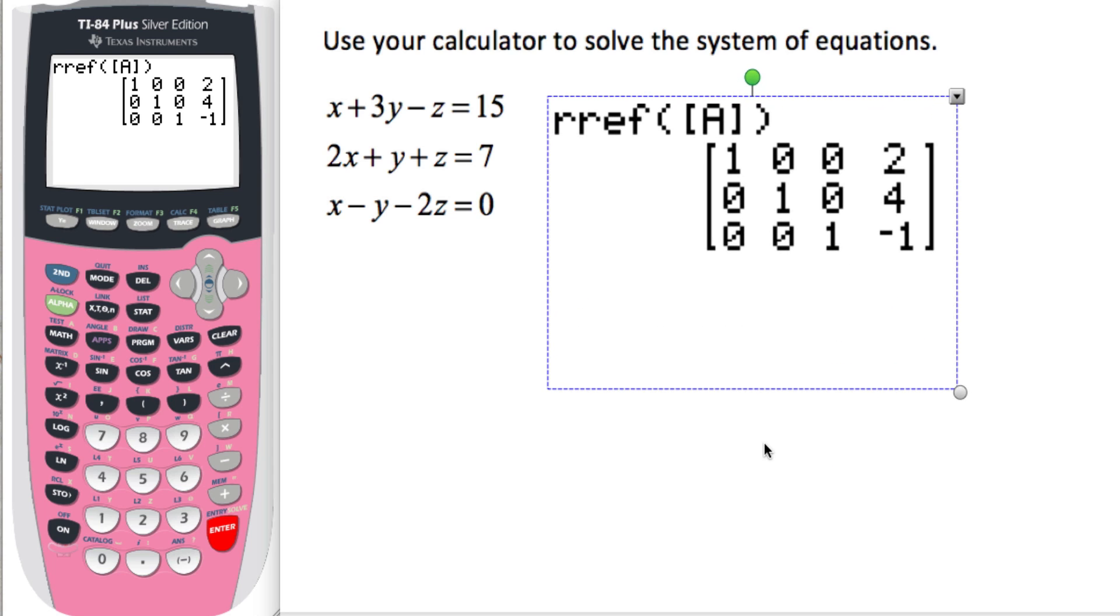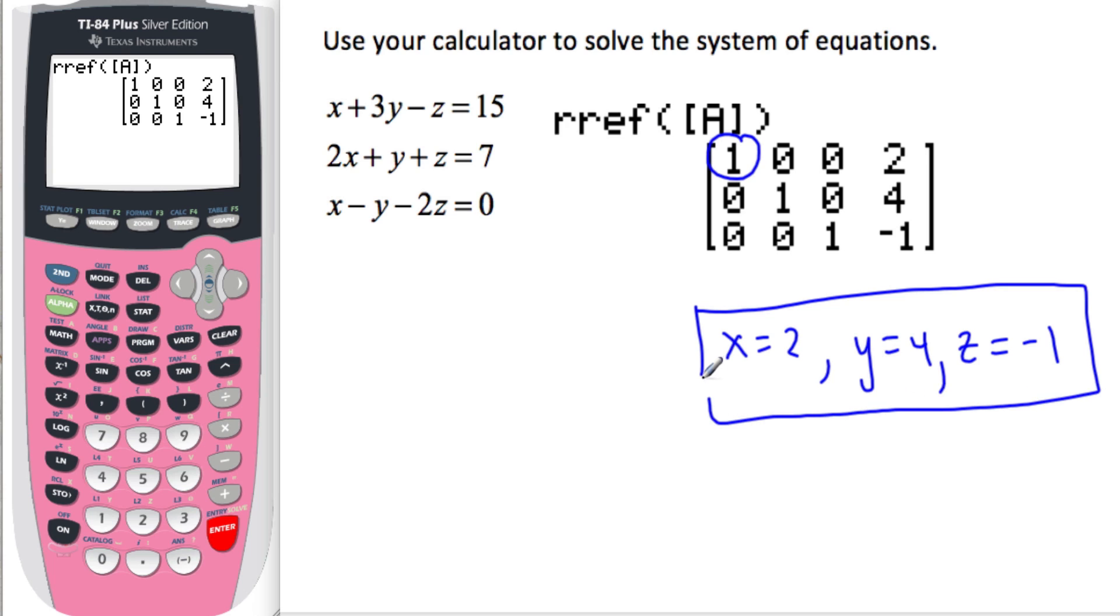So what this means is that 1x plus 0y plus 0z equals 2, which means x equals 2. 0x plus 1y plus 0z equals 4, so y equals 4. And 0x plus 0y plus 1z equals negative 1. So 1z or z equals negative 1, which means these three vector planes all intersect at one point.